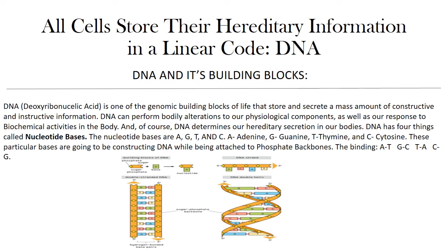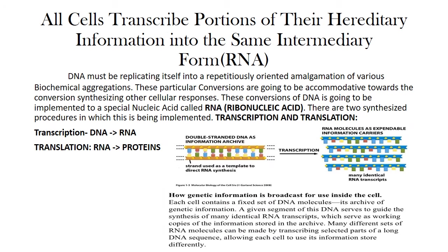But if you look at something like lipoproteins, then it's going to be differentiated from what is actually going to be presently abundant. All cells transcribe proportions of their hereditary information to the same intermediary form — RNA. DNA must be replicating itself into an amalgamation of various biochemical aggregations. These conversions of DNA are going to be implemented to a special nucleic acid called RNA, ribonucleic acid. There are two synthesized procedures in which this is being implemented: transcription and translation — transcription being DNA to RNA, translation being RNA to proteins.